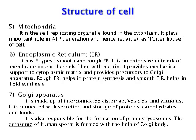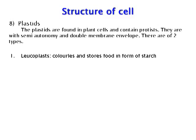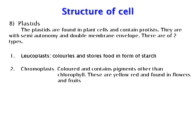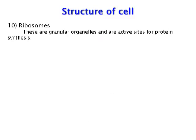The acrosome of human sperm is formed with the help of the Golgi body. Plastids are found in plant cells and contain protists; they have semi-autonomy and a double membrane envelope. There are two types: Leucoplasts, which are colorless and store food in the form of starch; Chromoplasts, which are colored and contain pigments other than chlorophyll, are yellow or red and found in flowers and fruits; and Chloroplasts, which are green in color and help in photosynthesis. Lysosomes are found in animal cells, contain hydrolytic enzymes, help in digestion of foreign particles and removal of carcinogens, and are also known as suicide bags of cells.